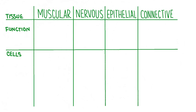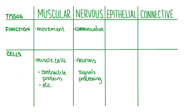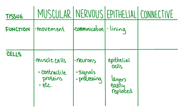In biology, structure and function are always directly related. Tissues are made of cells, so the types of cells found in a tissue determine the job that tissue can do. Muscular tissue is adapted for movement and contains muscle cells filled with special proteins and structures which allow them to contract. Nervous tissue is adapted for communication and contains special communication cells called neurons, which are built for transmitting signals and processing information. Epithelial tissue lines and covers various structures, so epithelial cells form one or more cohesive layers and are adapted to be relatively easily replaced.